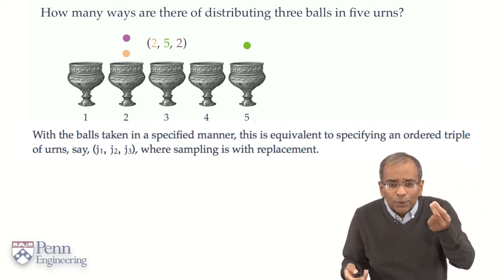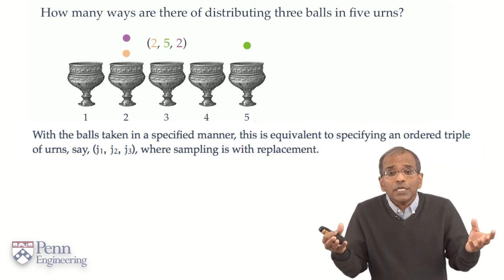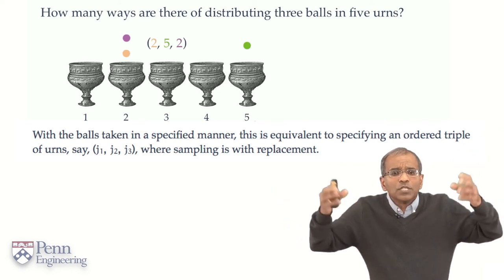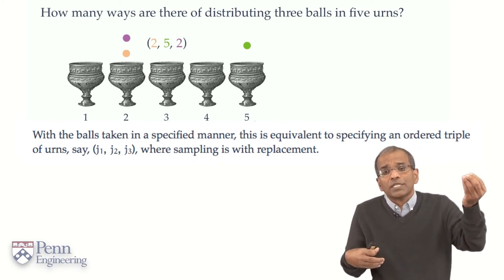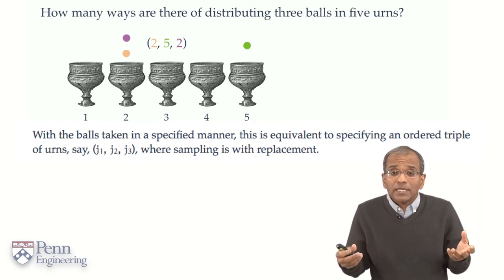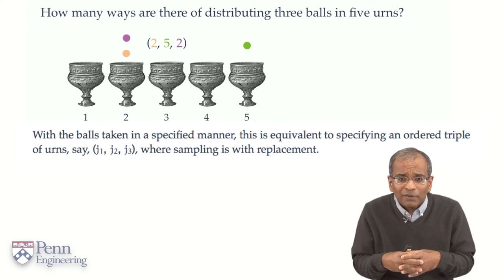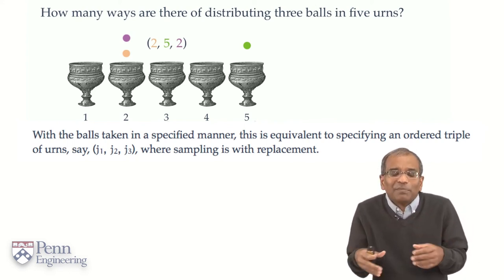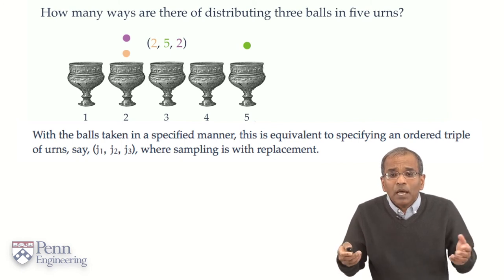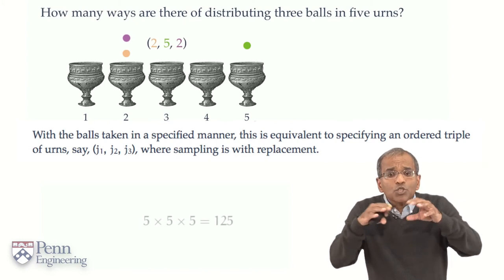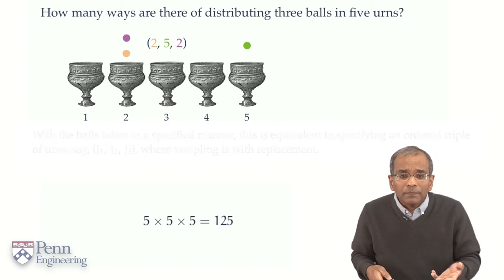The second number, j2, representing where the green ball has gone, has also five different possibilities. Nothing is precluded. Remember, the urns are infinitely distensible. You can put in as many balls as you want. And nothing in the problem statement prevents you from using an urn you've used before. So there are five distinct possibilities for j2. And likewise, there are five distinct possibilities for j3 for the purple ball. Now, an elementary principle of counting, which you'll have learned in kindergarten, perhaps, maybe in second or third grade, or perhaps in fifth grade, is that independent possibilities multiply. This is the essence of a multiplication table. And therefore, the number of ways in which you can specify an ordered triple like this is exactly 5 times 5 times 5.